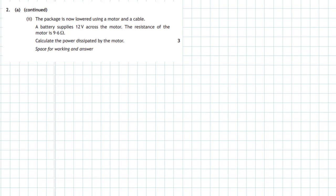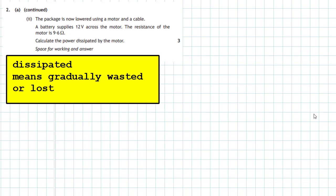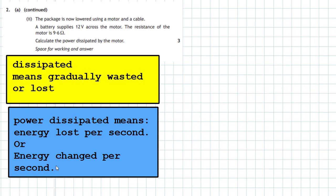Part two of question two of the 2018 Higher Physics examination. The package is now lowered using a motor and a cable. The battery supplies 12 volts across the motor and the resistance of the motor is 9.6 ohms. We need to calculate the power dissipated by the motor — an electrical question appearing in a dynamics part of the exam. The word 'dissipate' means gradually wasted or lost, so power dissipated means energy lost per second.